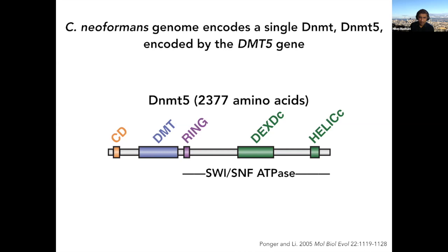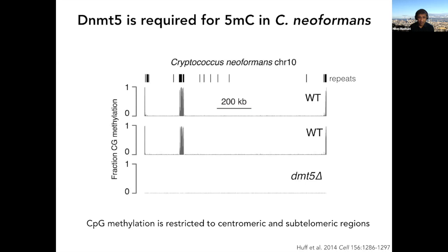Cryptococcus does have cytosine methylation, concentrated at the centromere. Shown here is a cytosine DNA methylation track from bisulfite sequencing of chromosome 10 — a big pile of CG methylation at the centromere, true of all chromosomes, plus a little in subtelomeric regions. If you knock out the gene, you lose all cytosine methylation globally.